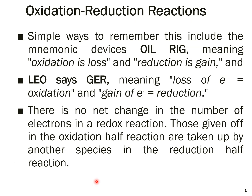It is very important to note that there is no net change in the number of electrons in a redox reaction. Some species give electrons and others receive them. The electrons given in the oxidation half are taken up by the reduction half reaction, so you will not find any net change in electron count in the whole reaction.